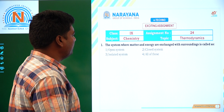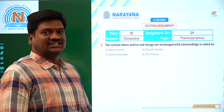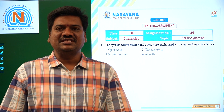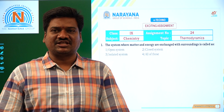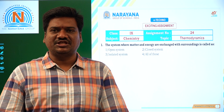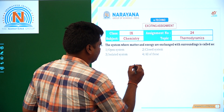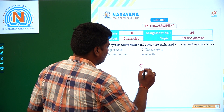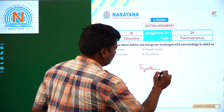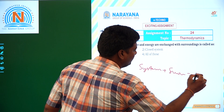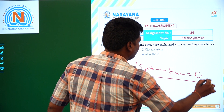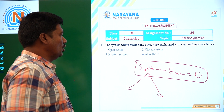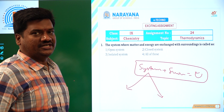The system where matter and energy are exchanged with surroundings is the universe. Universe is made up of system and surroundings. Without system or without surroundings there is no universe. System plus surroundings equals universe. Now these systems are classified into three types: open system, closed system, and isolated system.